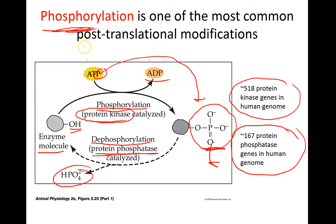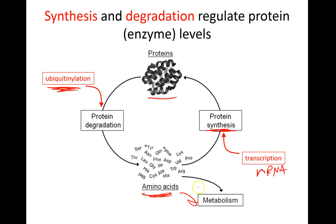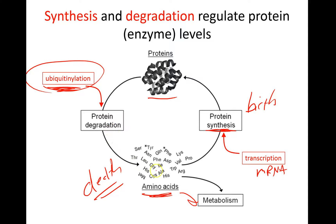One of the most important ways to very rapidly change the structure and therefore the activity of enzymes is through phosphorylation. So this is the life cycle of a protein: first you get transcription and mRNA, that gets translated and you have the birth of a protein. The protein can then be ubiquitinated — this is the addition of a different covalent modification to a protein — and when that happens the protein gets destroyed down into amino acids, which can be used for metabolism or the production of more protein. So that's the birth and the death of a protein, and the death is mediated by ubiquitination.